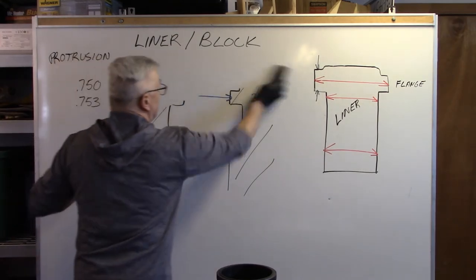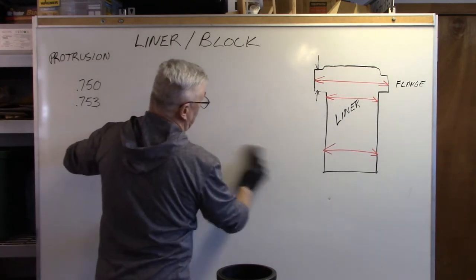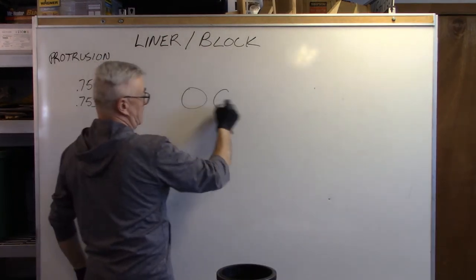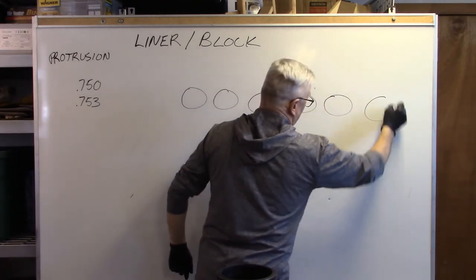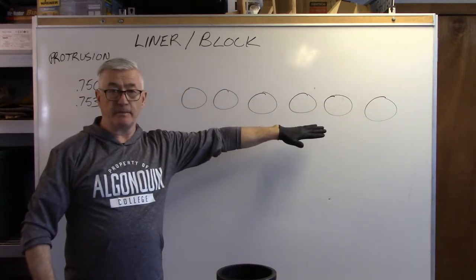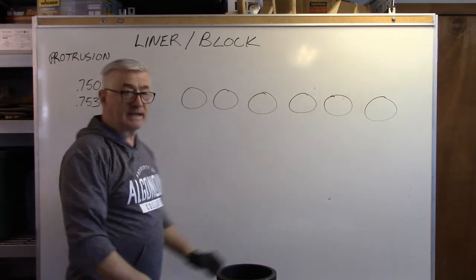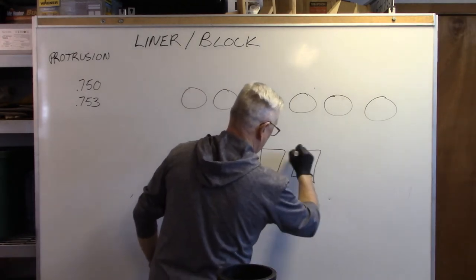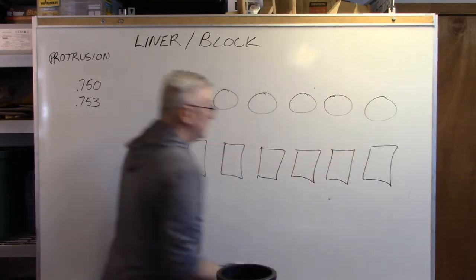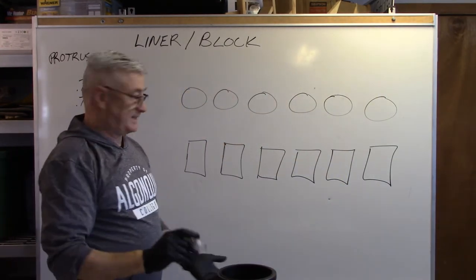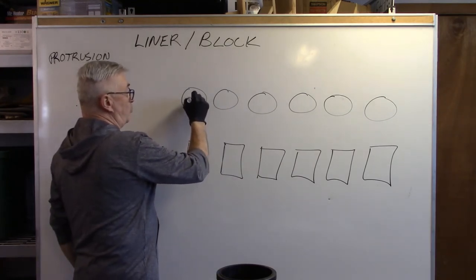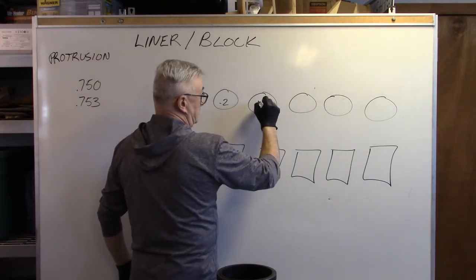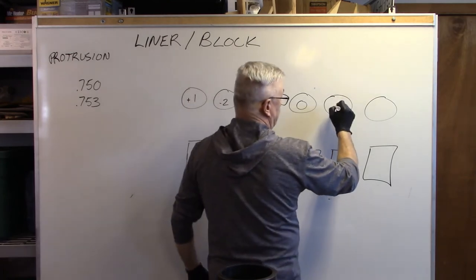I would record all of those measurements for each bore in the block. And then, there is my six cylinders. I have measured them all and I have all the measurements. Now I take my six liners. And I measure all of my liners. And I kind of give them a grading system. So this one is, let's say this one is plus one thou over and this one is minus two. And this one is plus three and zero. This one is perfect. And this one is a one. And this one is a one.